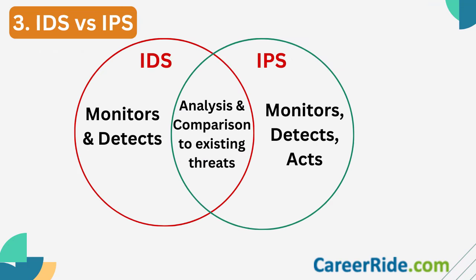Question number three: What is the difference between intrusion detection system (IDS) and intrusion prevention system (IPS)? Now that we are talking about attacks on the system and preventing them, there are two types of approaches here — the first one is detection and the other one is prevention. Both of them work in tandem with each other.